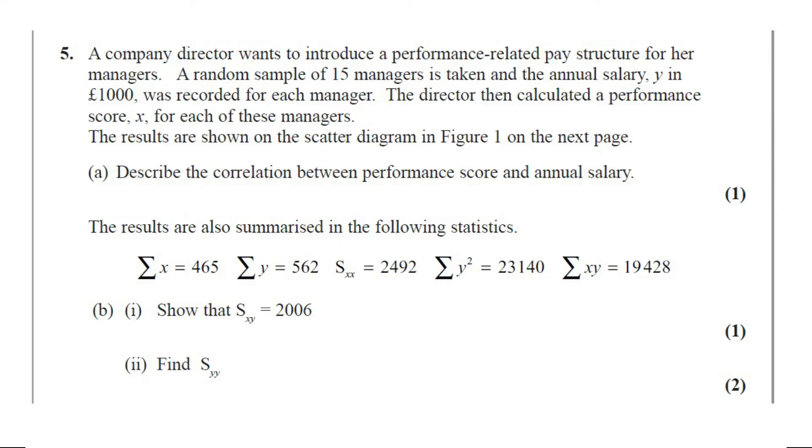Question number 5. A company director wants to introduce a performance-related pay structure for her managers. A random sample of 15 managers is taken and the annual salary Y in £1000 was recorded for each manager. The director then calculated a performance score X for each of these managers. The results are shown on the scatter diagram in figure 1 on the next page. Part A describes the correlation between performance score and annual salary.